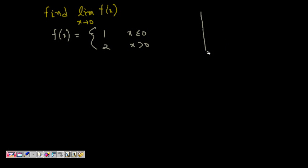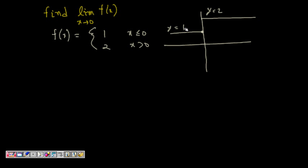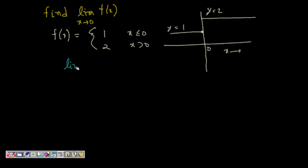If we plot this: f(x) is 1 for x less than or equal to 0, and f(x) is 2 for x greater than 0. So y = 1 for the left portion and y = 2 for the right portion, with 0 as the boundary. Now, the left-hand limit — as x tends to 0 from the negative side — the value is approaching 1.